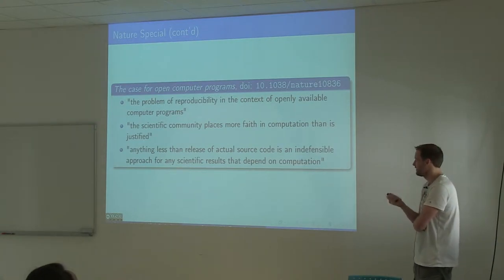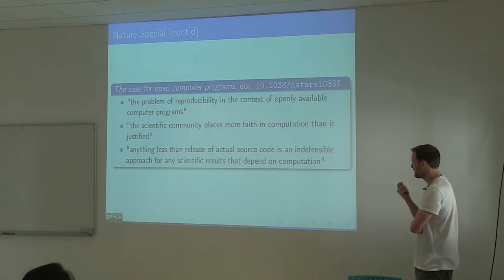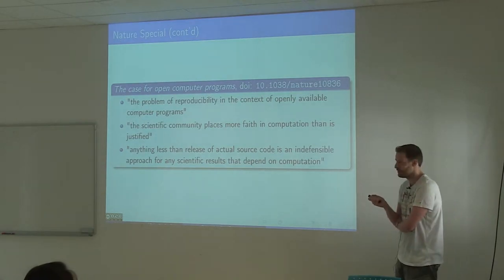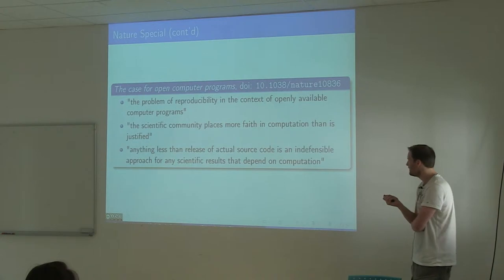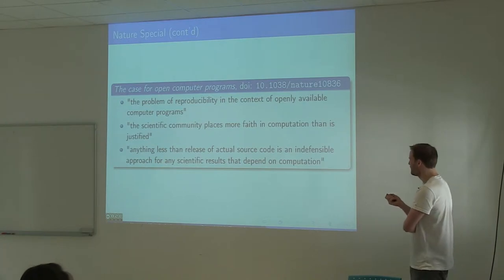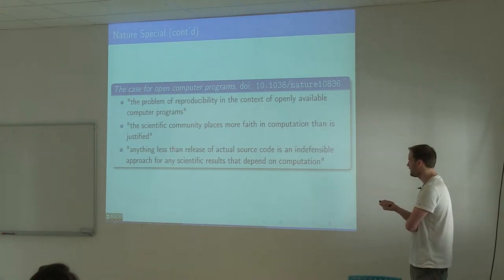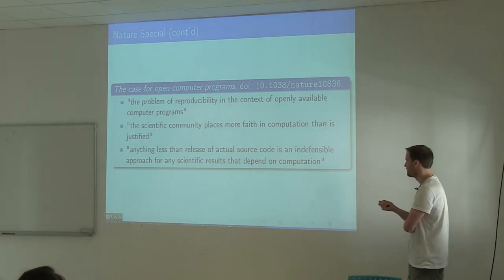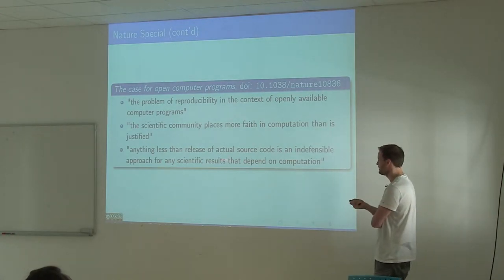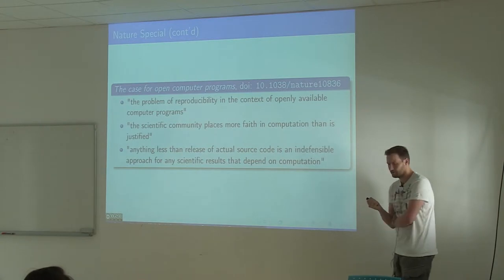That's one thing that I think is very important to realize: programmers, including myself, we make mistakes. Computers cannot do everything up to the one billionth decimal accurately. Therefore, the authors of this paper claim that anything less than release of actual source code is an indefensible approach for any scientific results that depend on computation.